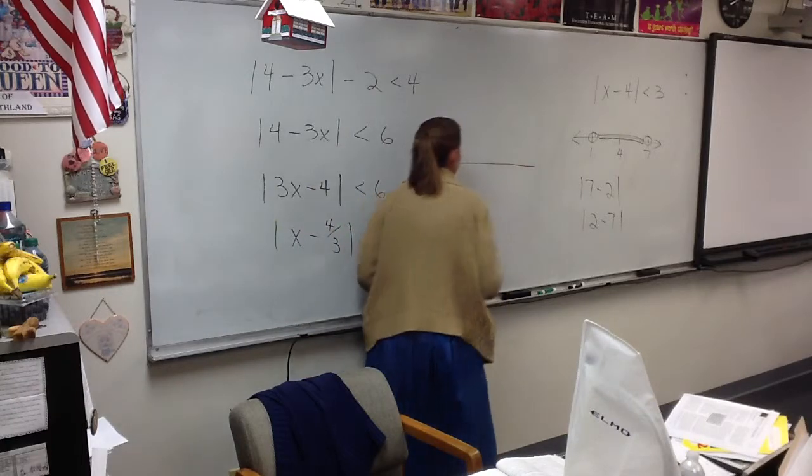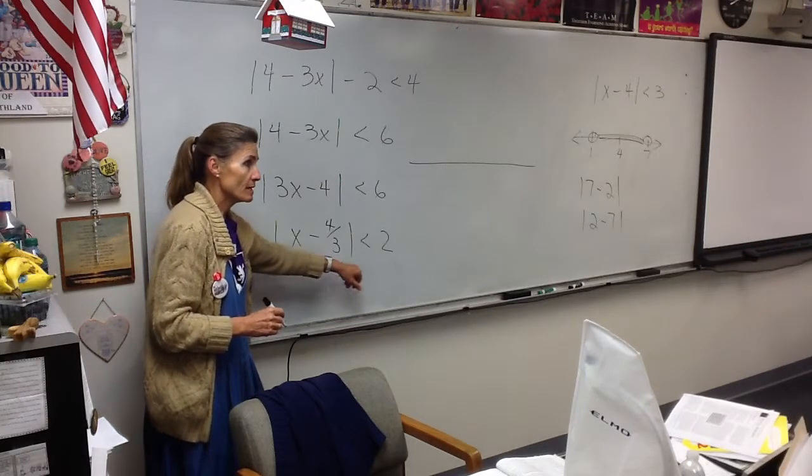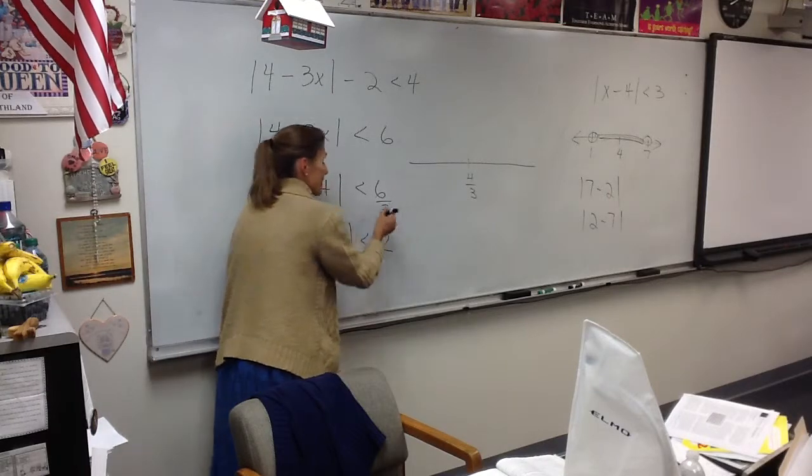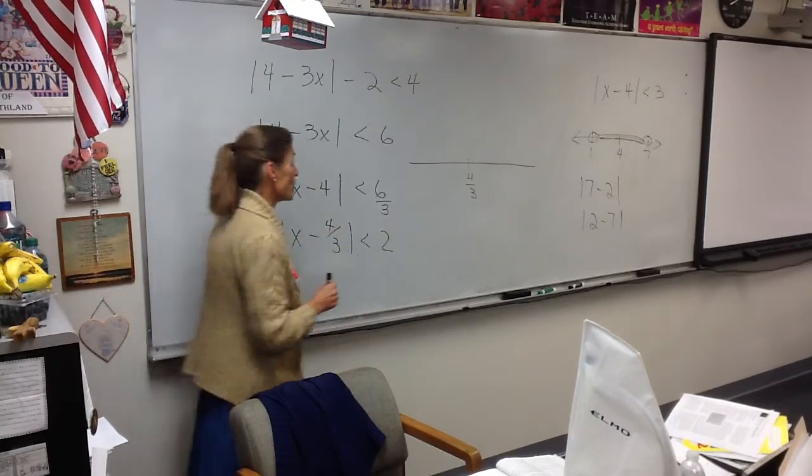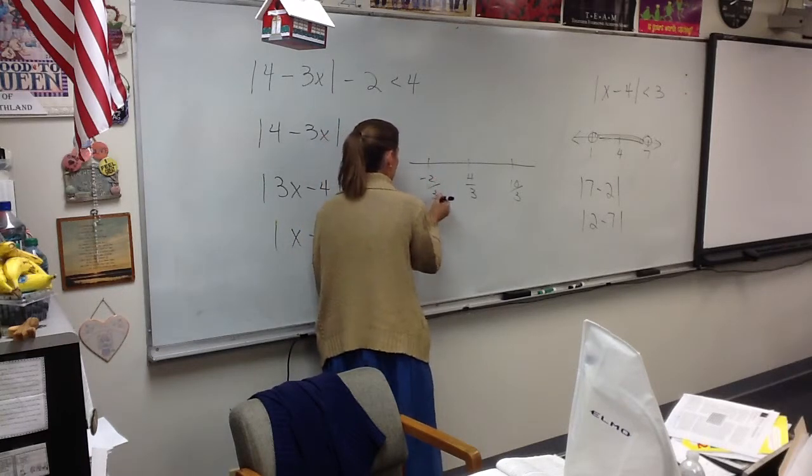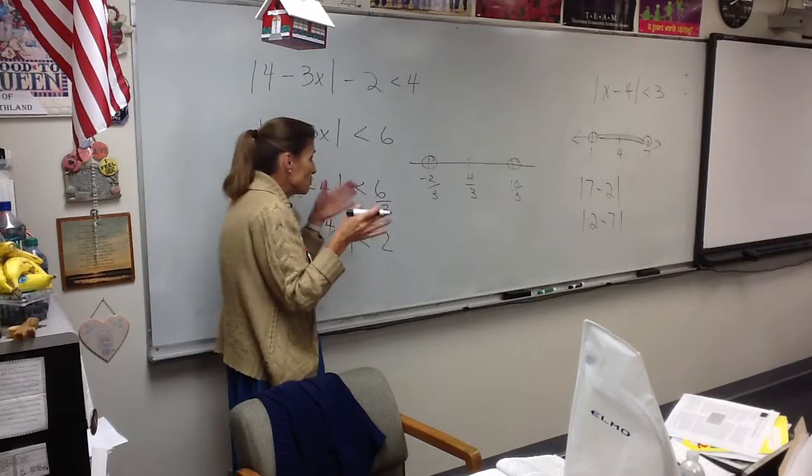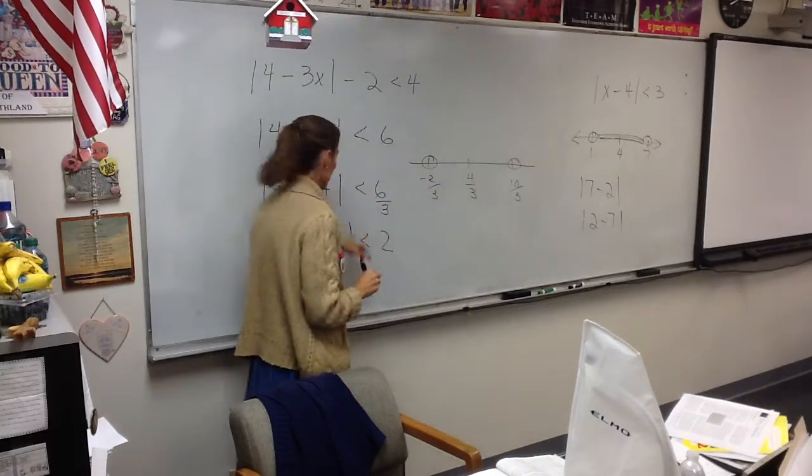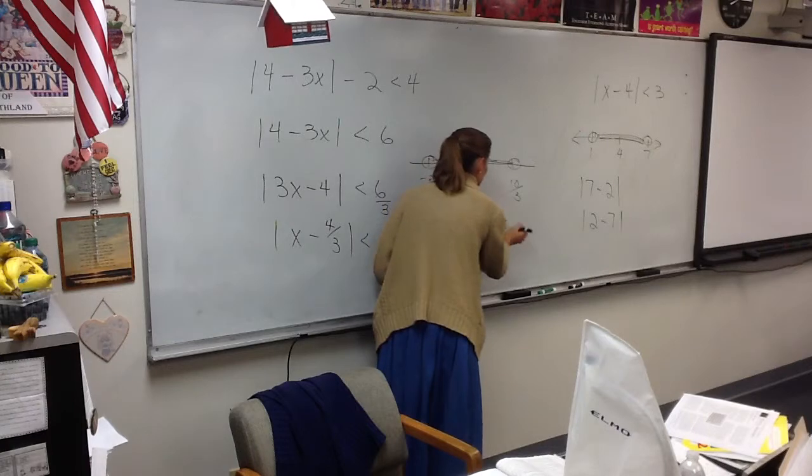Now, draw your number line. What does this problem say? It says the distance between something and 4 thirds is less than 2. So here's 4 thirds. If the distance has to be less than 2, and you may want to think of that 2 as 6 thirds. If the distance is 6 thirds, what's the farthest out you could be? 10 thirds? And what's the farthest back this way you could be? Negative 2 thirds? They're open dots again. You've got to decide, do you want the numbers in between the dots, or do you want the numbers beyond the dots? Less than? Right here. So your answer is everything between negative 2 thirds and 10 thirds.